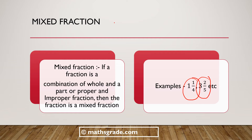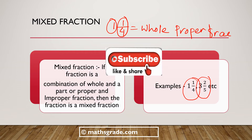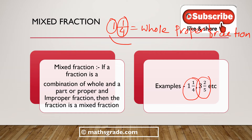In the fraction 1 and 1/4, here 1 is the whole number and 1/4 is the proper fraction, because 1 is less than 4. So 1/4 is a proper fraction, and the mixed fraction is a combination of the whole number and the proper fraction.